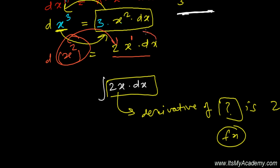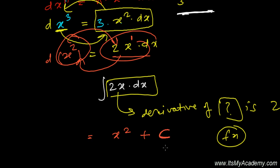Since integration is the reverse process of derivative, we directly write x squared, and always put the constant of integration. That's it. We'll talk more about the integration process in the next video — a lot of tricks and methods to find integration faster. We'll first deal with indefinite integration, then later learn about definite integration. See you in the next video, bye bye!